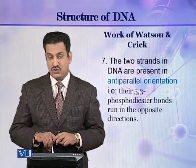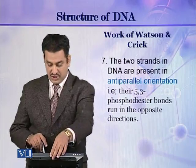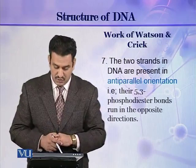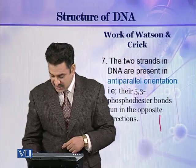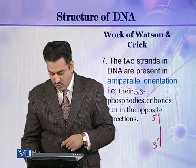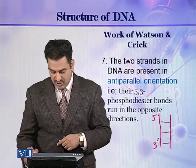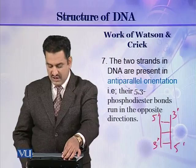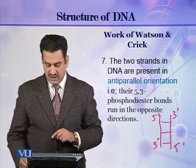Watson and Crick also described that the two strands of DNA are present in an anti-parallel orientation. That is, their 5' to 3' phosphodiester bonds run in opposite directions. If one strand runs 5' to 3' in one direction, the other strand runs 3' to 5' in that same direction. In this way, the two strands are present in an anti-parallel orientation.